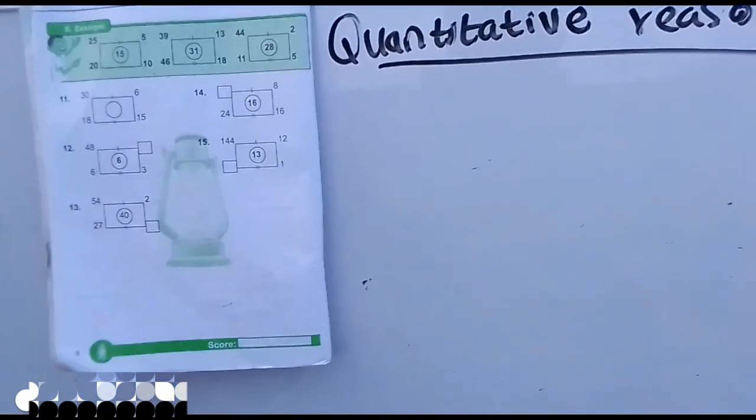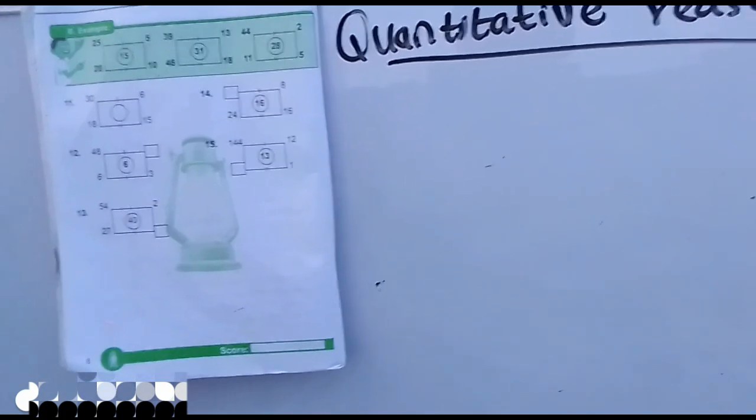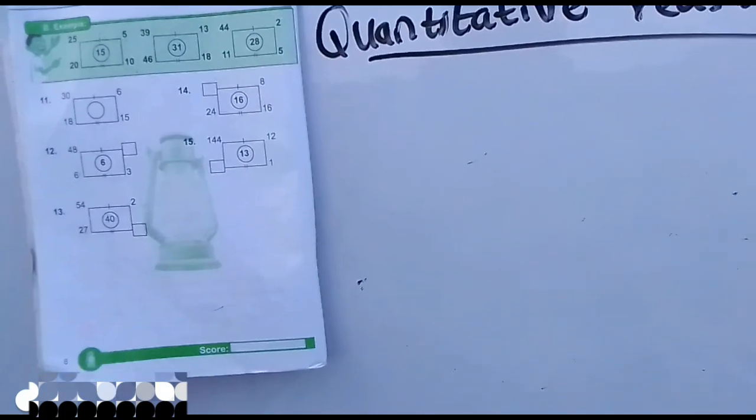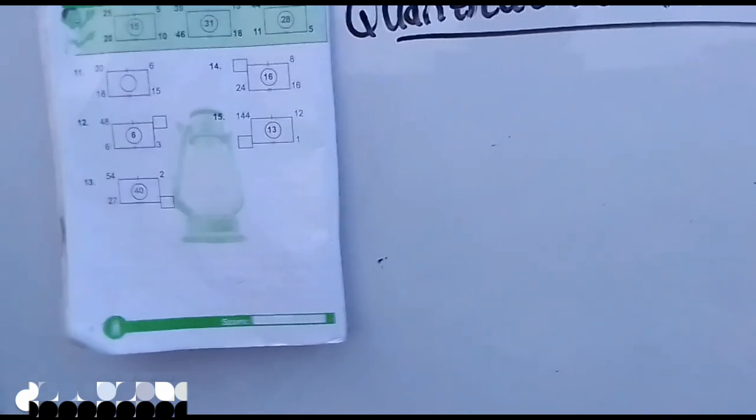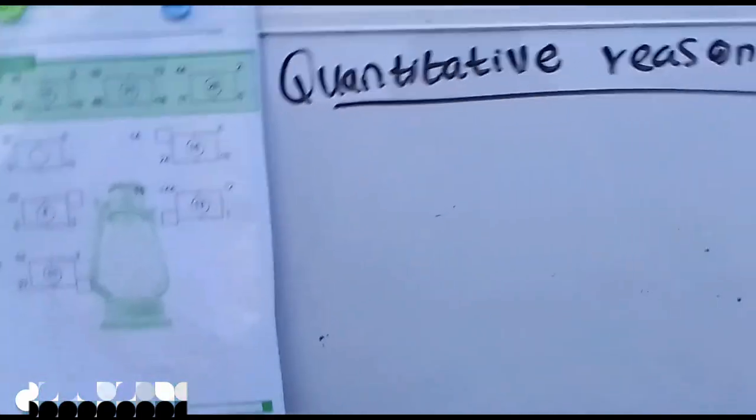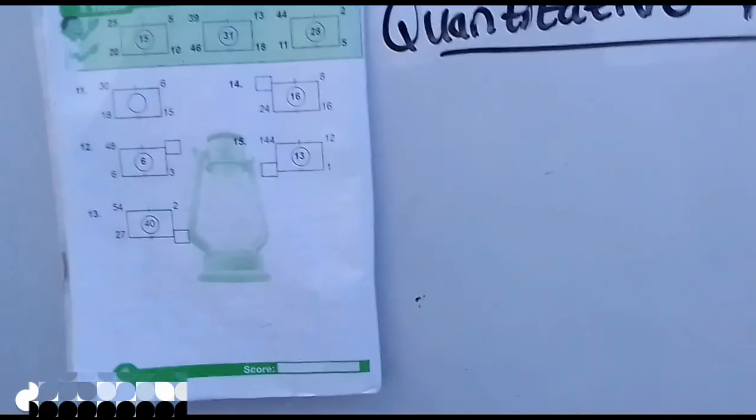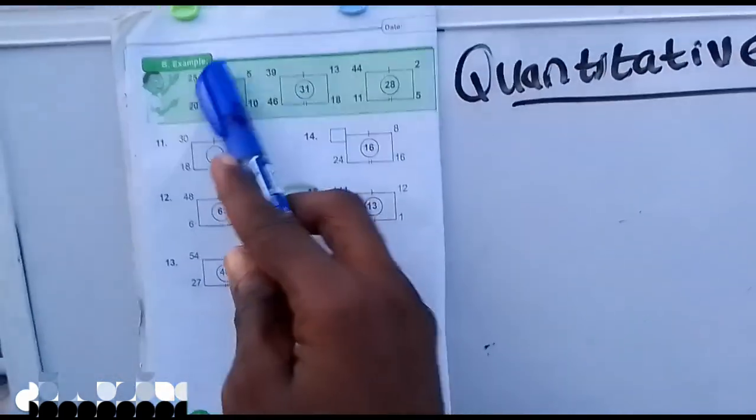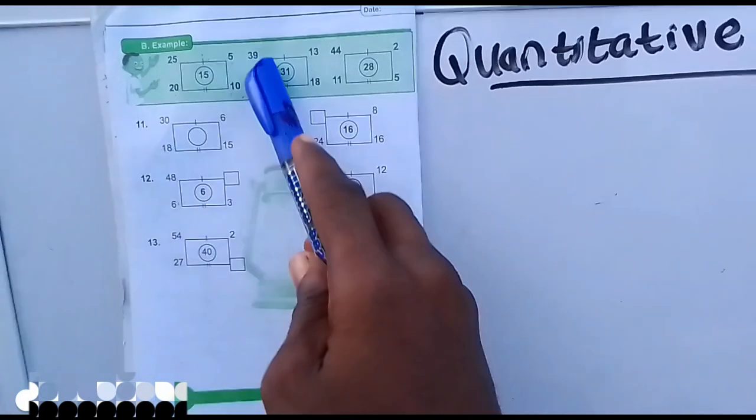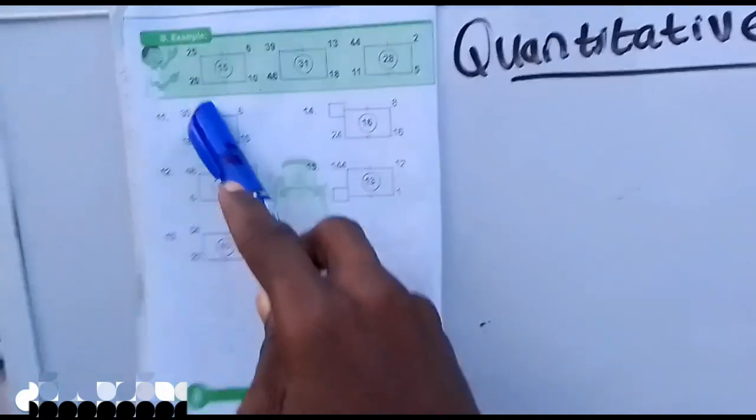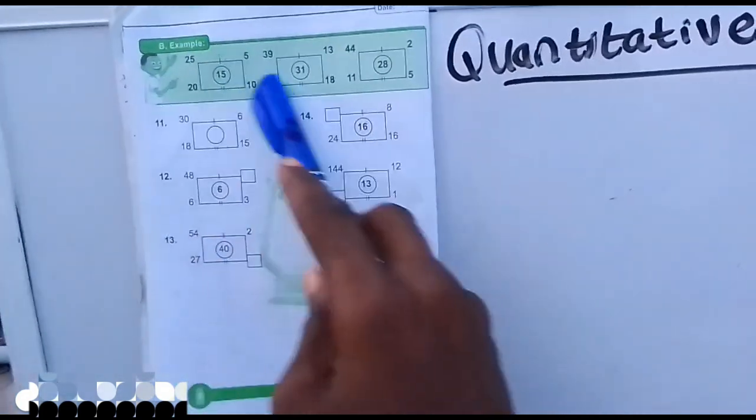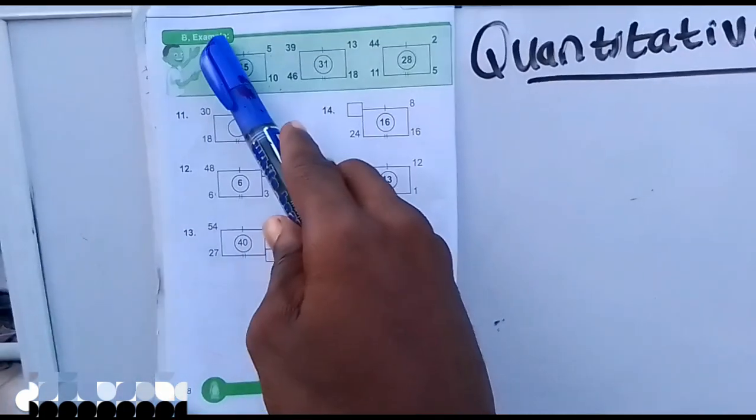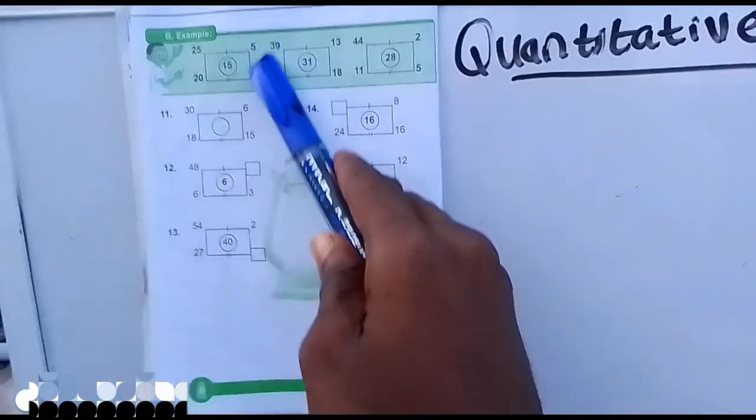Many things. One is there is a relationship between the 25 and the 5. There's a relationship between 25 and 5 and 20 and 10. Because of the way the box is, there can also be relationship between 25 and 10.